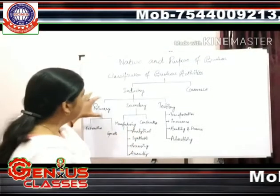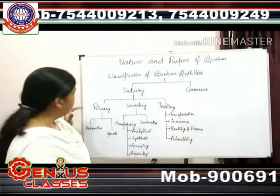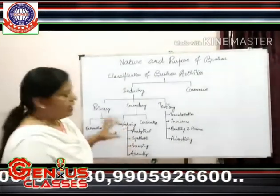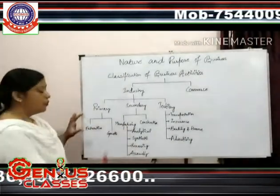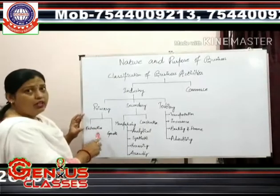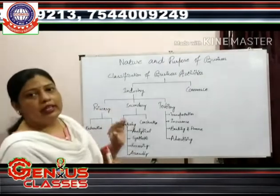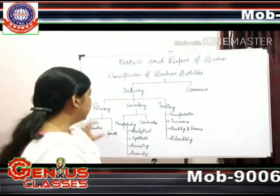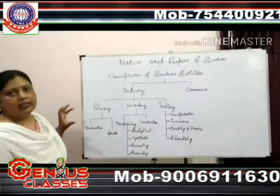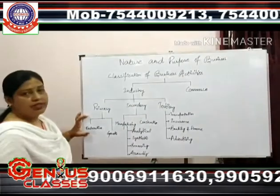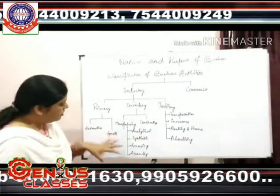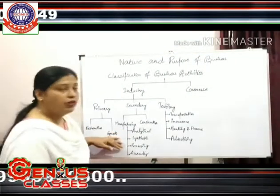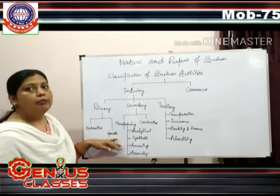We divide primary industry into two categories. One is extractive and another one is genetic. In extractive industries, we include all the industries where we are extracting resources from the earth's crust, such as minerals. Genetic industry involves rearing and breeding of animals and plants.